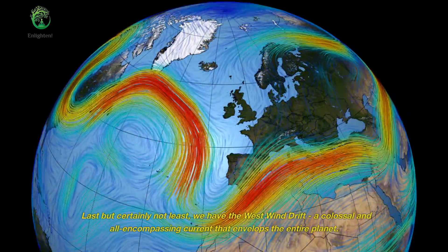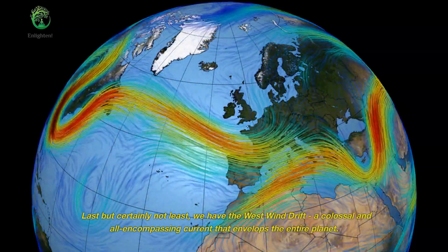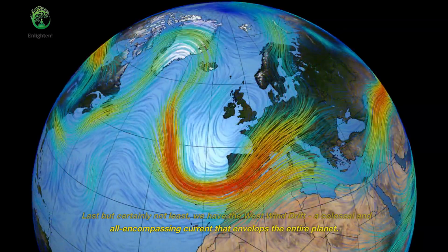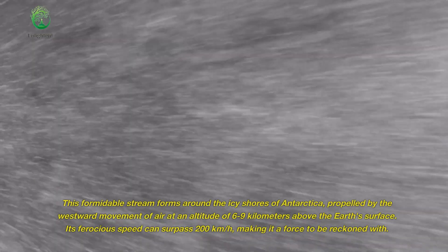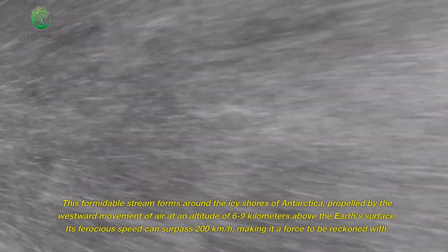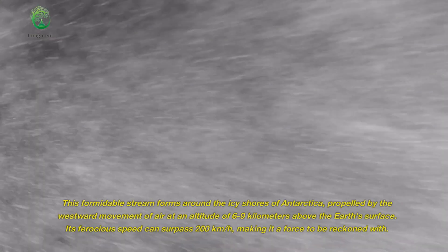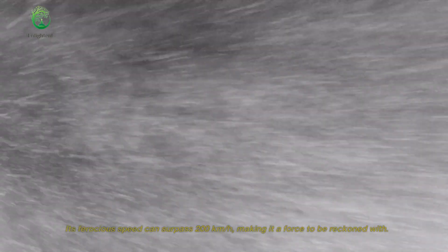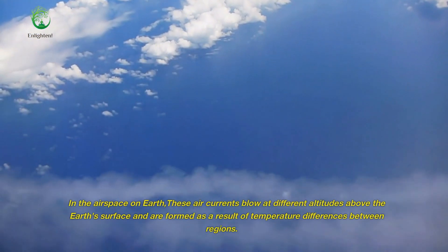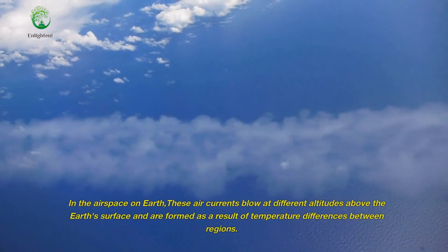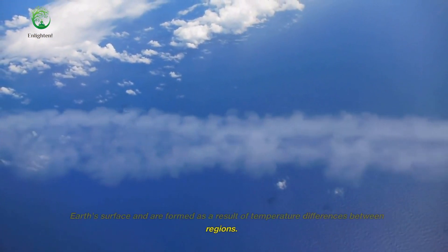Last but certainly not least, we have the West Wind Drift, a colossal and all-encompassing current that envelops the entire planet. This formidable stream forms around the icy shores of Antarctica, propelled by the westward movement of air at an altitude of 6 to 9 kilometers above the Earth's surface. Its ferocious speed can surpass 200 kilometers per hour, making it a force to be reckoned with. In the airspace on Earth, these air currents blow at different altitudes above the Earth's surface and are formed as a result of temperature differences between regions.